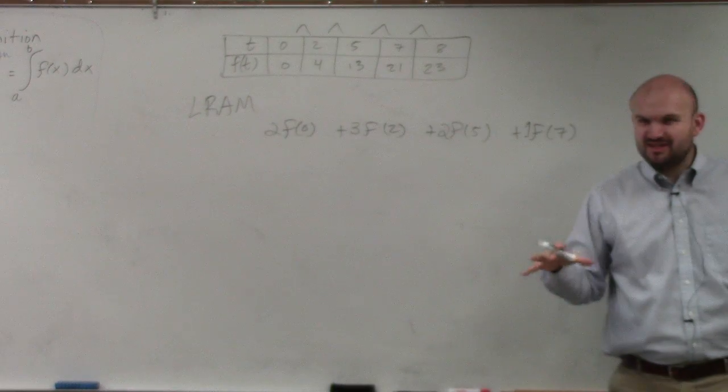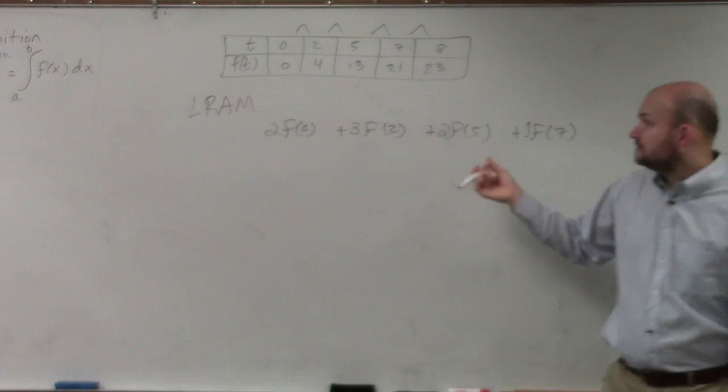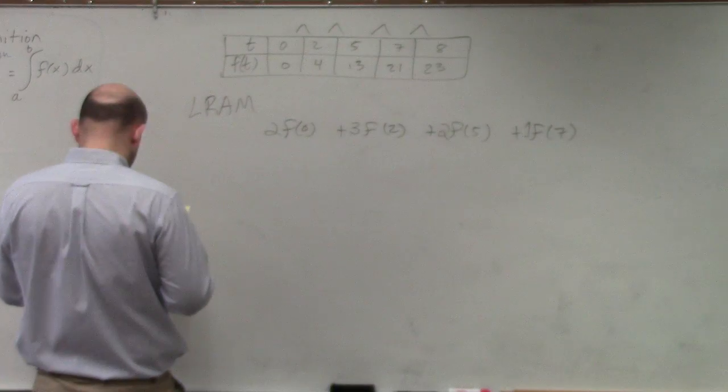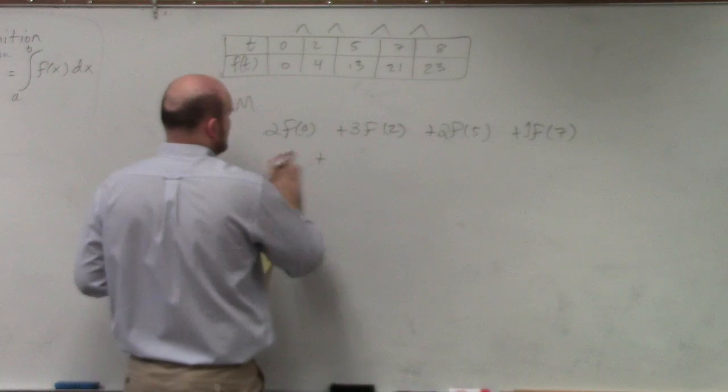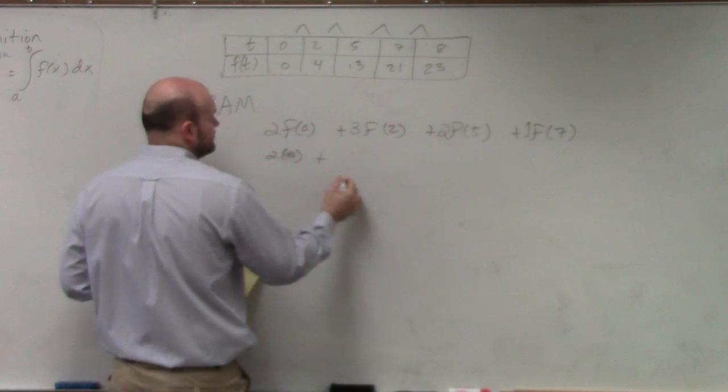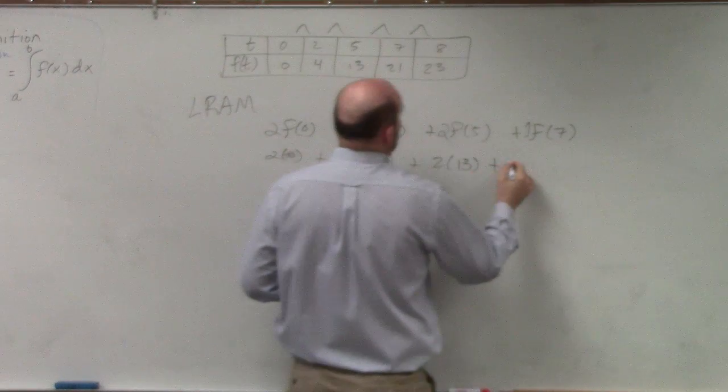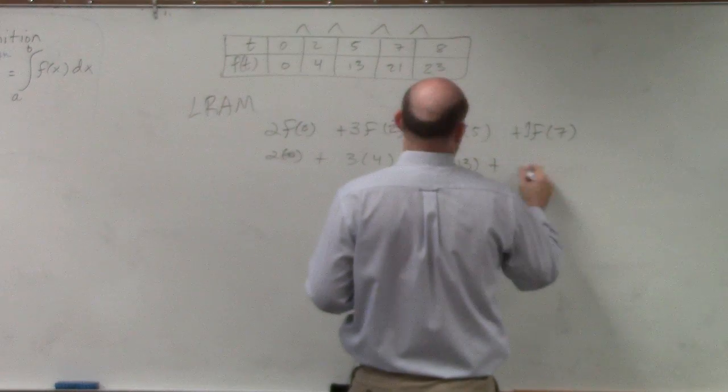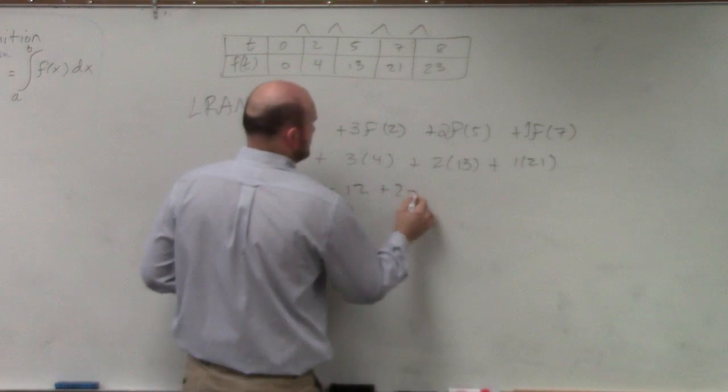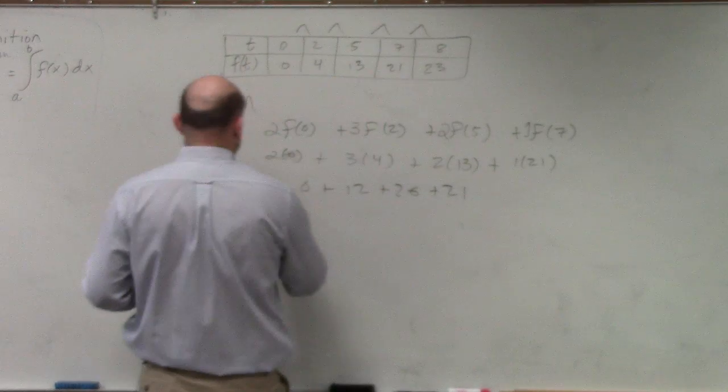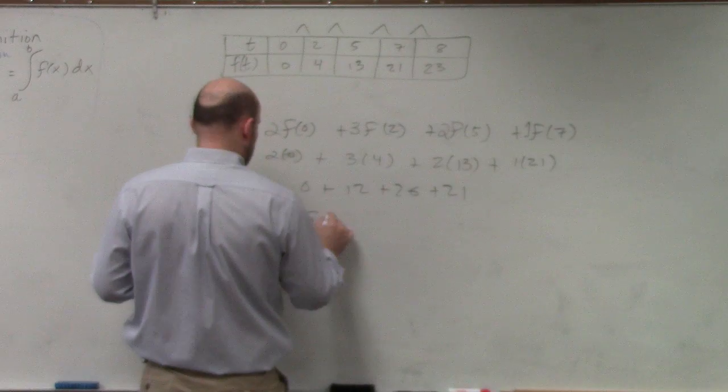So now, it's basically f of 0, did I plug it in there? Yeah. Is 0, or it's really 2 times 0, plus 3 times 4, plus 2 times 13, plus f of 7, 1 times 21. And then my approximation is going to be 59.